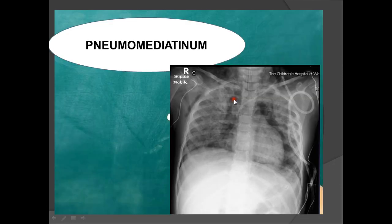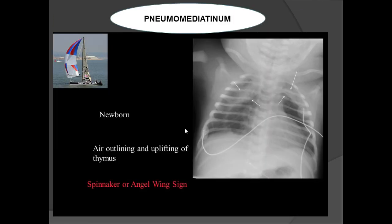Coming to pneumomediastinum: air is seen within the mediastinum as streaky lucencies on both sides, also tracking along the pericardium, into the neck region, and into the axilla. This is pneumomediastinum.